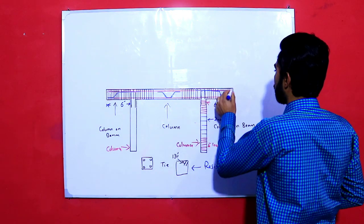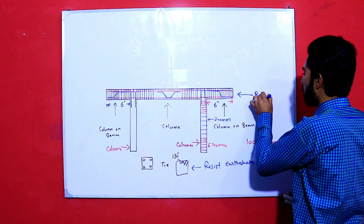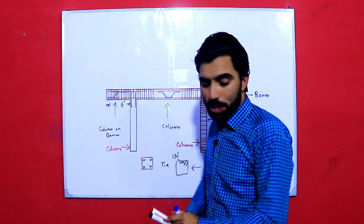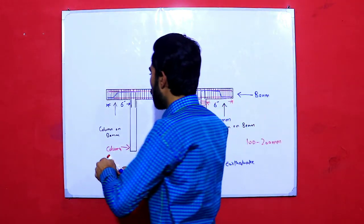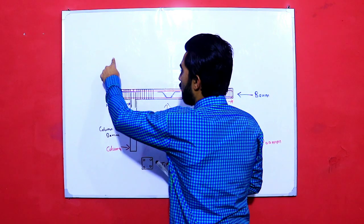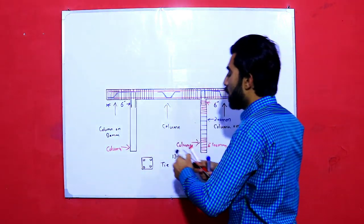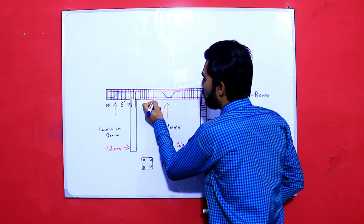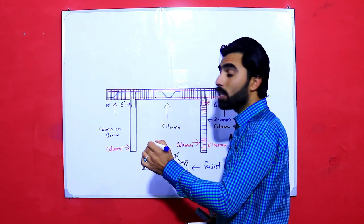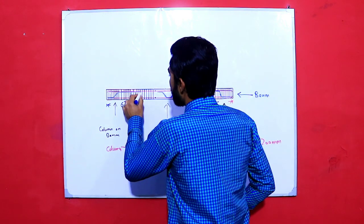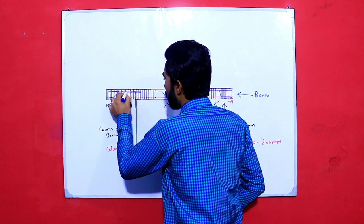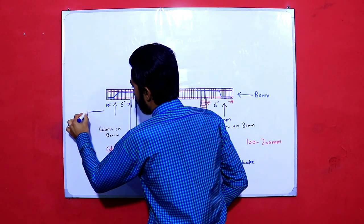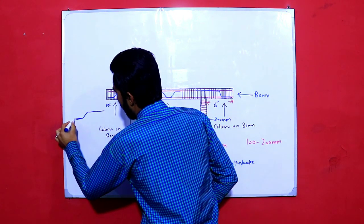Now, as you can see, this is a beam, and we want to provide a column at this point and also at this point. As you can see, this red color shows the main bars in the beam. This is a bent-up bar — you can see it here — and this is the symbol of the bent-up bar. We will provide the bent-up bar like this.